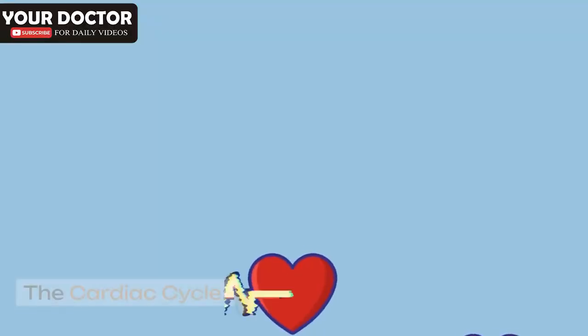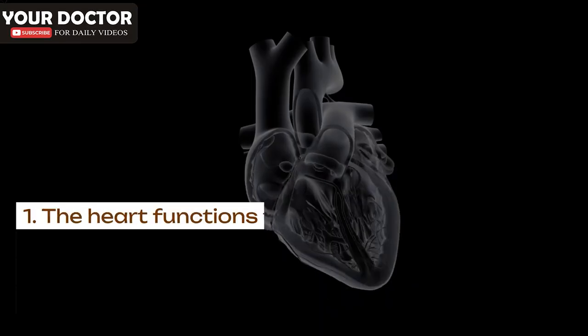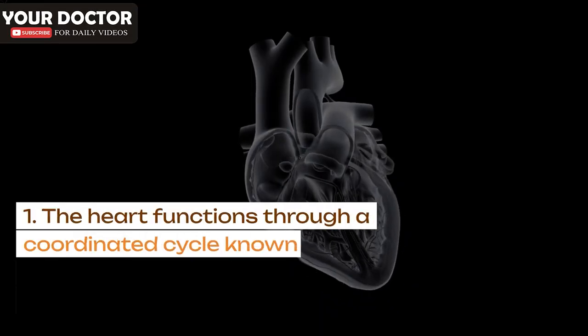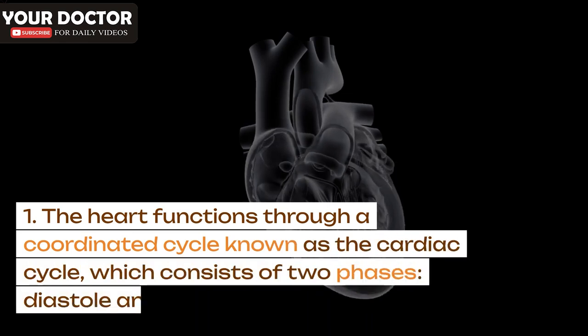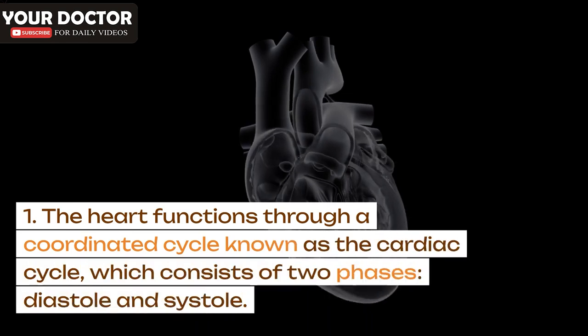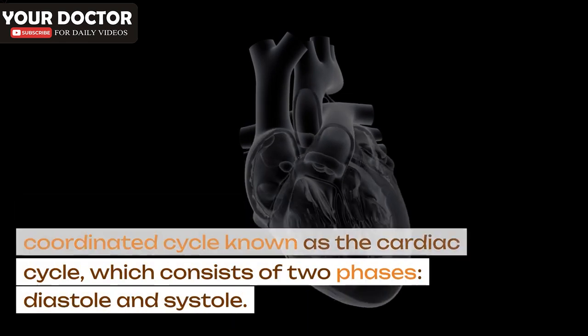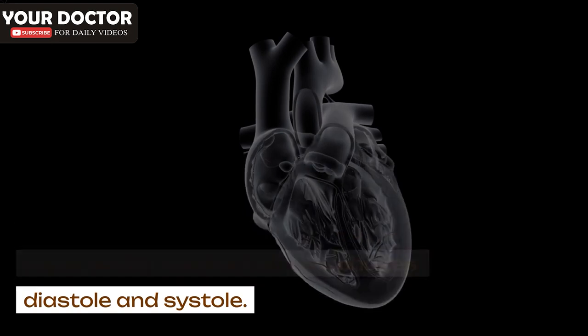The heart functions through a coordinated cycle known as the cardiac cycle, which consists of two phases: diastole and systole.